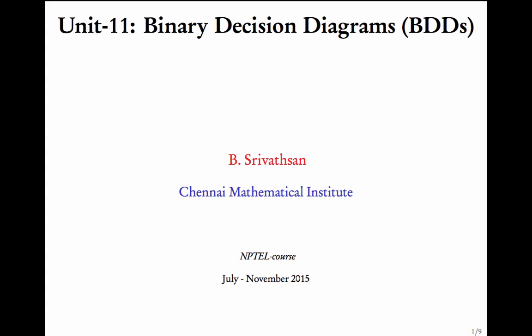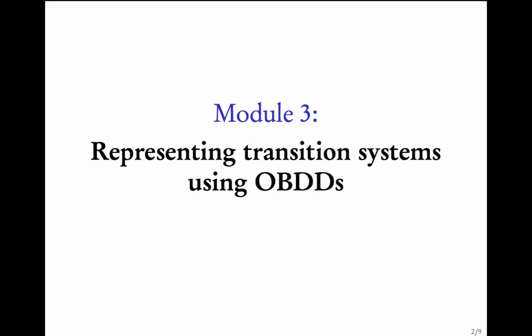We are in unit 11 of this course. This unit is on binary decision diagrams. In the last two modules we have given an introduction to binary decision diagrams. They are a data structure for representing boolean functions. Now why did we talk about boolean functions and BDDs? We will explain this in this module. We want to represent transition systems using ordered BDDs.